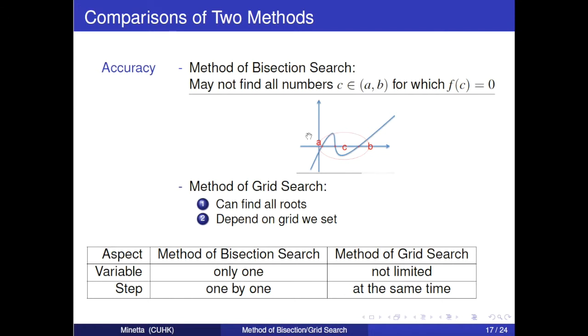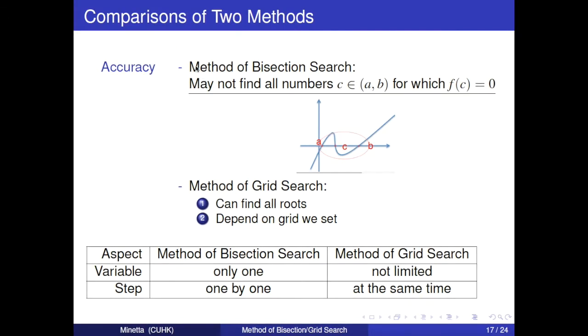Following are the comparisons of two methods. First is about accuracy. For method of bisection search, it may not find all numbers c in interval [a, b] for which f(c) equals 0. For example, looking at this curve, at point a, f(a) is less than 0, whereas point b, f(b) is larger than 0. At their midpoint c, f(c) is less than 0, which means that the next search will continue in the interval [c, b]. However, for method of grid search, since all the domain is used, it can find all routes. But actually, the value we get depends on grid we set. The smaller grid, the more accurate value.